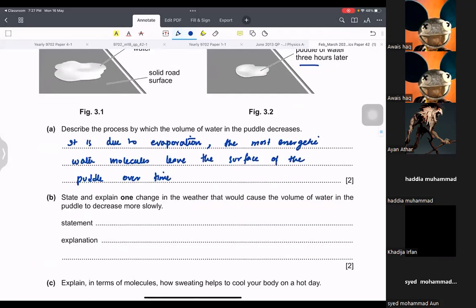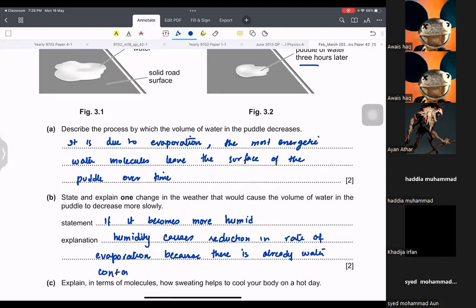State one change in the weather that would cause the puddle water to decrease more slowly. If it becomes more humid, because humidity causes reduction in rate of evaporation. And the reason behind that is because there is already water content in air. So if there is already too much water content in air, then it means that more water content will have difficulty to go.